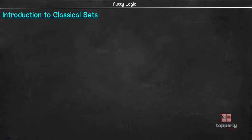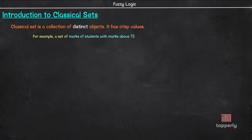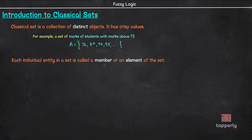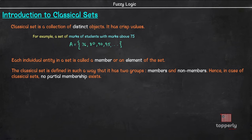Let us now move on to an introduction to classical sets. A classical set is a collection of distinct objects and it has crisp values. For example, a set of marks of students with marks above 75. If we write this as set A, then A can have values such as 76, 80, 90, 95, and so on. Each individual entity in a set is called a member or an element of the set. So 76, 80, 90, 95 are called elements or members of set A. The classical set is defined in such a way that it has two groups: members and non-members.